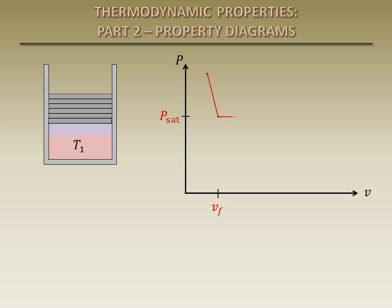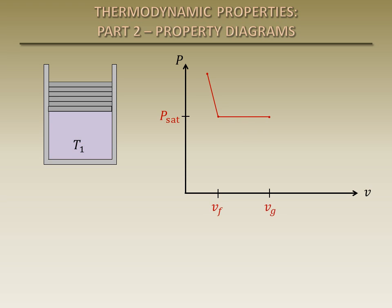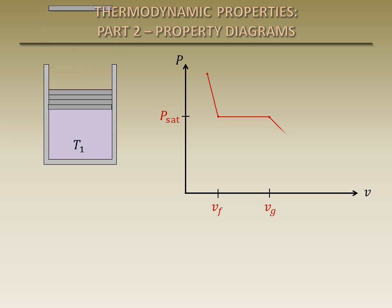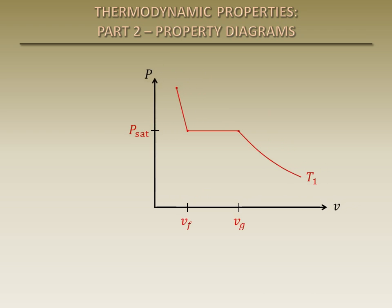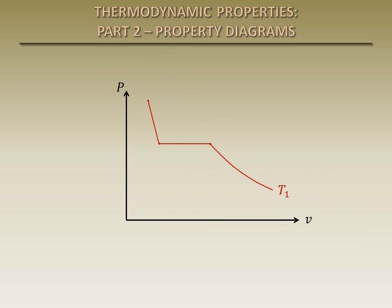Just like before, the specific volume increases from VF to VG as the saturated liquid becomes a saturated vapor. As the pressure is further decreased, the specific volume continues to increase and the substance becomes a superheated vapor. Remember that energy transfer is occurring throughout this process so that the temperature remains constant. If we change the temperature of the substance, the process follows a similar path.